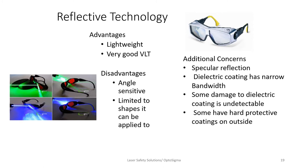Reflective technology usually gives good VLT and is lighter weight. The goal is that the wavelength of concern gets reflected off while visible wavelengths are transmitted through. Disadvantages include angle sensitivity, limited frame shapes, and the question of whether reflected laser radiation can hurt someone else — the answer is yes, depending on the beam output. Reflective filters usually offer only a narrow bandwidth of protection, and they typically use a dielectric coating, where even microscopic damage may not be obvious.